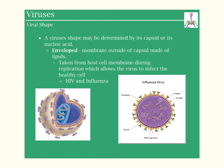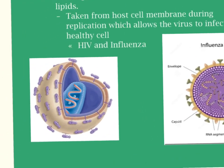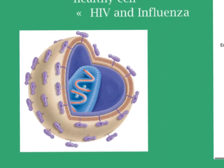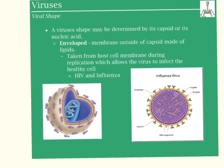What they're going to do is they've taken from a host cell that membrane during replication, so that allows the virus to infect the healthy cell. An enveloped virus that has a membrane around it would be something like the HIV virus. Right here is where you can see those phospholipids, which we've talked about numerous times in this class.